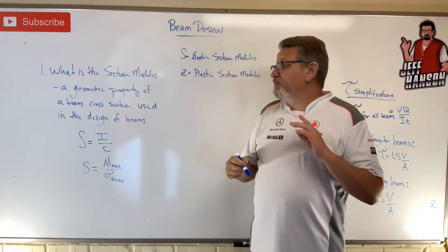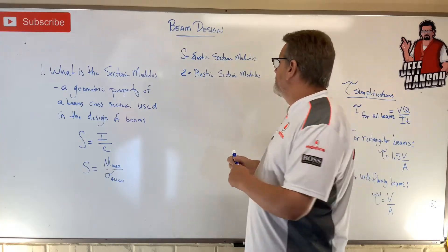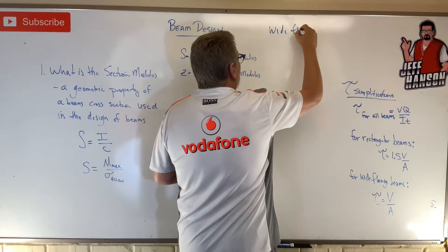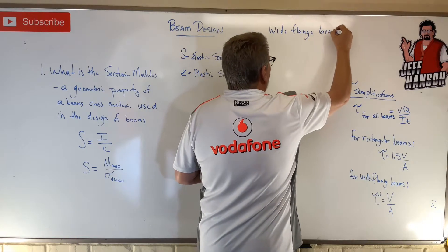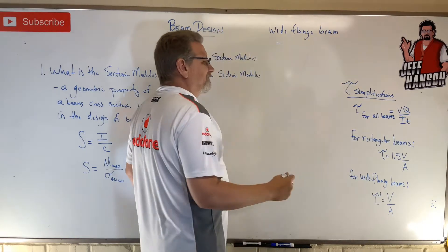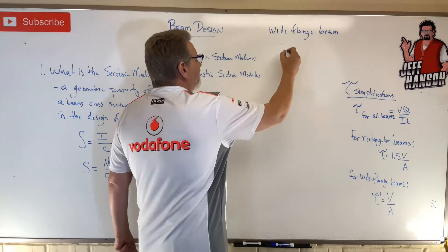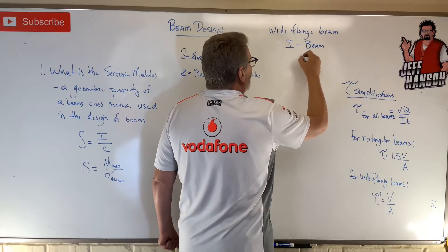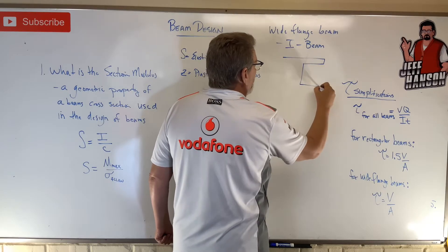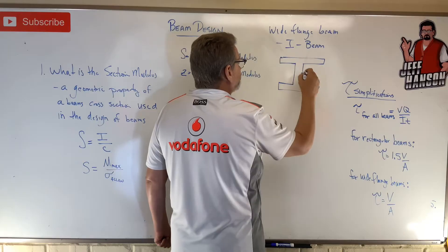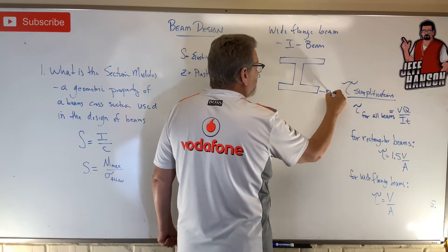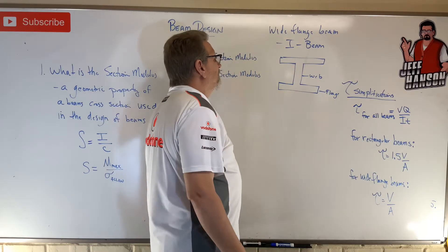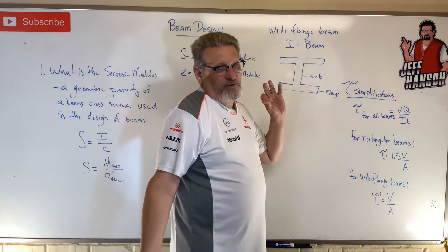One of the things we do, especially when talking about wide flange beams — number one, what is a wide flange beam? That's just another name for an I-beam. On our beams, this part is called the flange and this is called the web. A wide flange beam is nothing more than an I-beam.